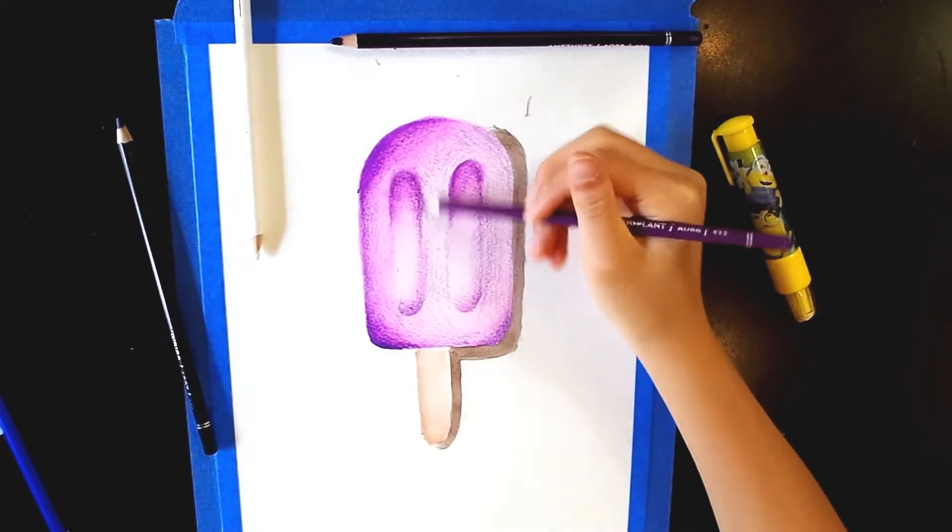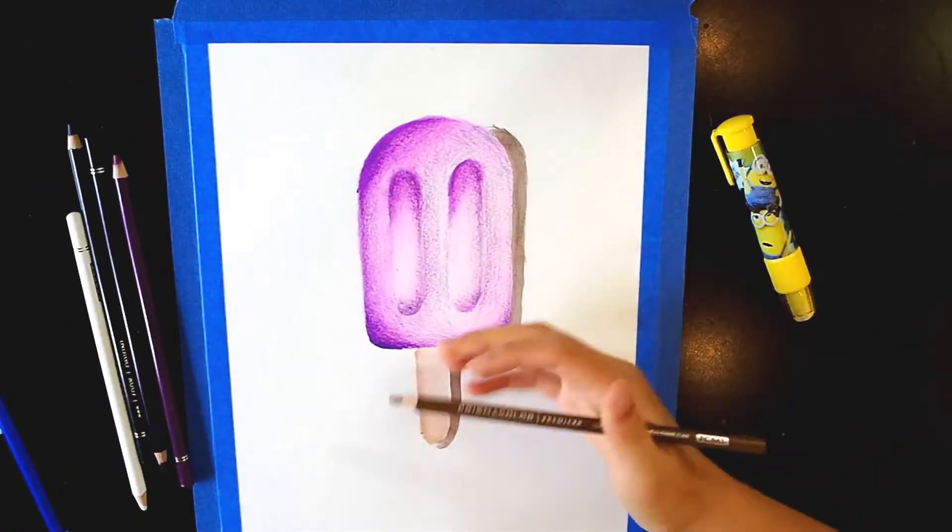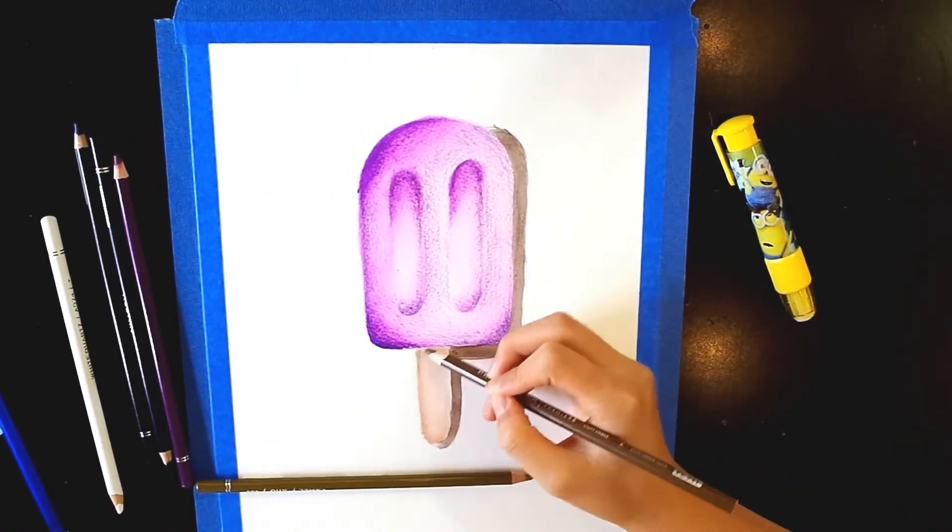A lot of time blending and shading later, this is what I have. Add the final touches. Use a tan to add shadows for the popsicle stick.